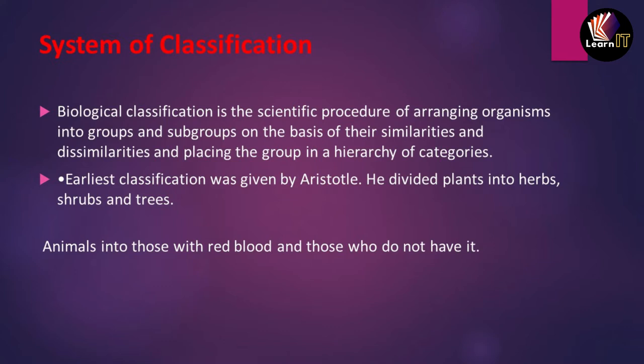In earlier classification, Aristotle divided plants into three categories: herbs, shrubs, and trees. He also classified animals into two groups: animals that have red blood, and animals that do not have red blood. These were the kinds of classification done in earlier times.